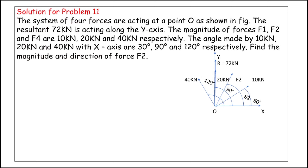F1 is 10 kilonewtons, F3 is 20 kilonewtons, and F4 is 40 kilonewtons. The angles made by the forces with the x-axis are: 10 kN at 30°, 20 kN at 90°, and 40 kN at 120° from the x-axis. We have to find the magnitude and direction of force F2.